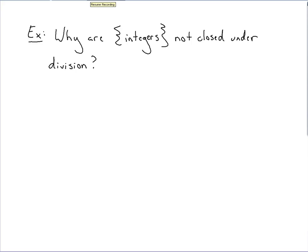Why are integers not closed under division? Trying to understand this closure idea.